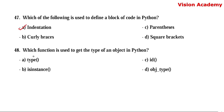Question number 48. Which function is used to get the type of an object in Python? Option A: type. Option B: isinstance. Option C: id. Option D: obj_type. Here, option A — type — is the right answer.